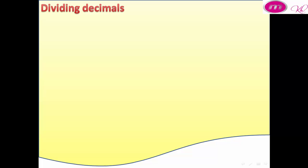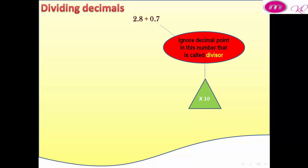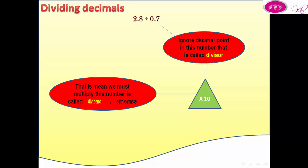Dividing decimals: 2.8 divided by 0.7. First, we must ignore the decimal point in the divisor by multiplying it by 10. That means we must also multiply the dividend by 10. So 28 divided by 7 equals 4.